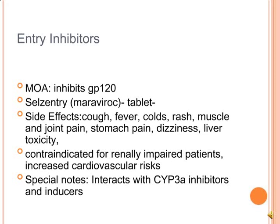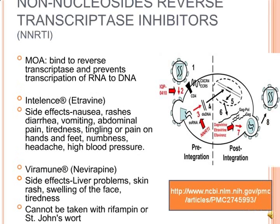The CCR5 inhibitor inhibits GP120. Side effects include cough, fever, cold, rash, muscle and joint pain, dizziness, and liver toxicity. It is contraindicated for renally-impaired patients and increases cardiovascular risk. It also interacts with CYP3A inhibitors and inducers.